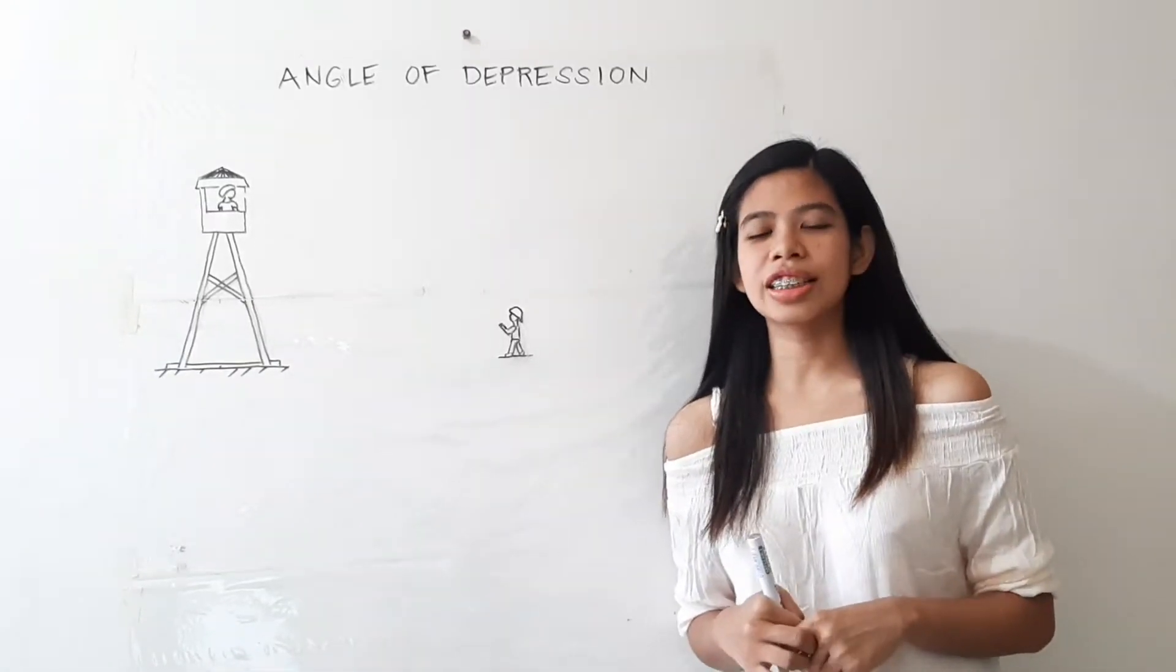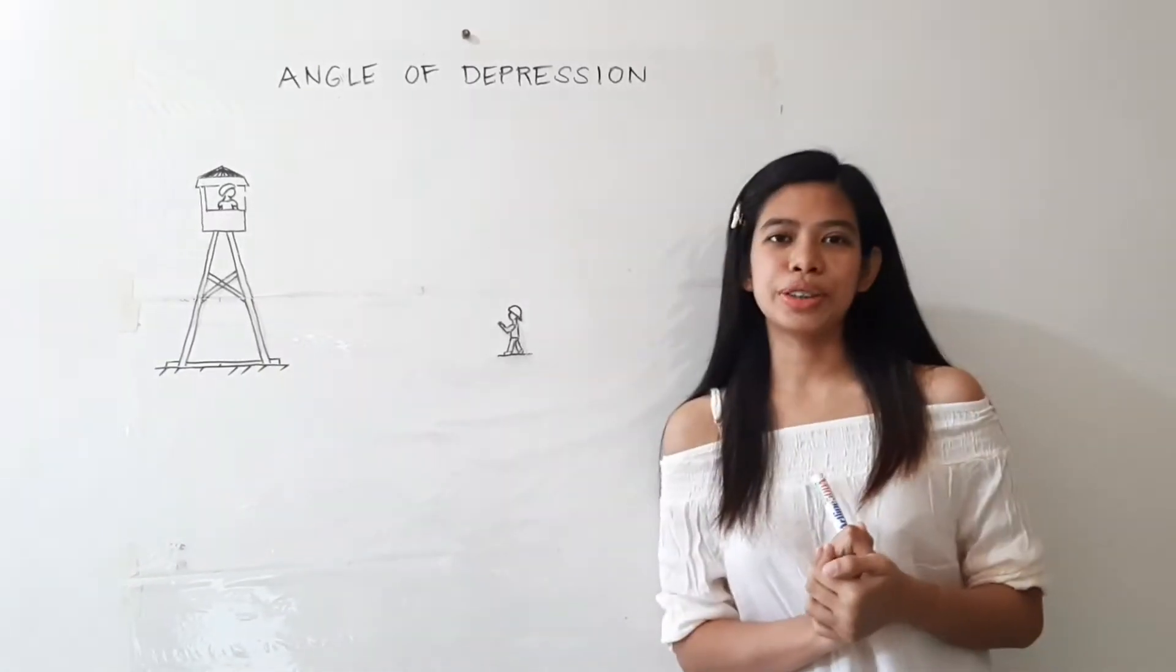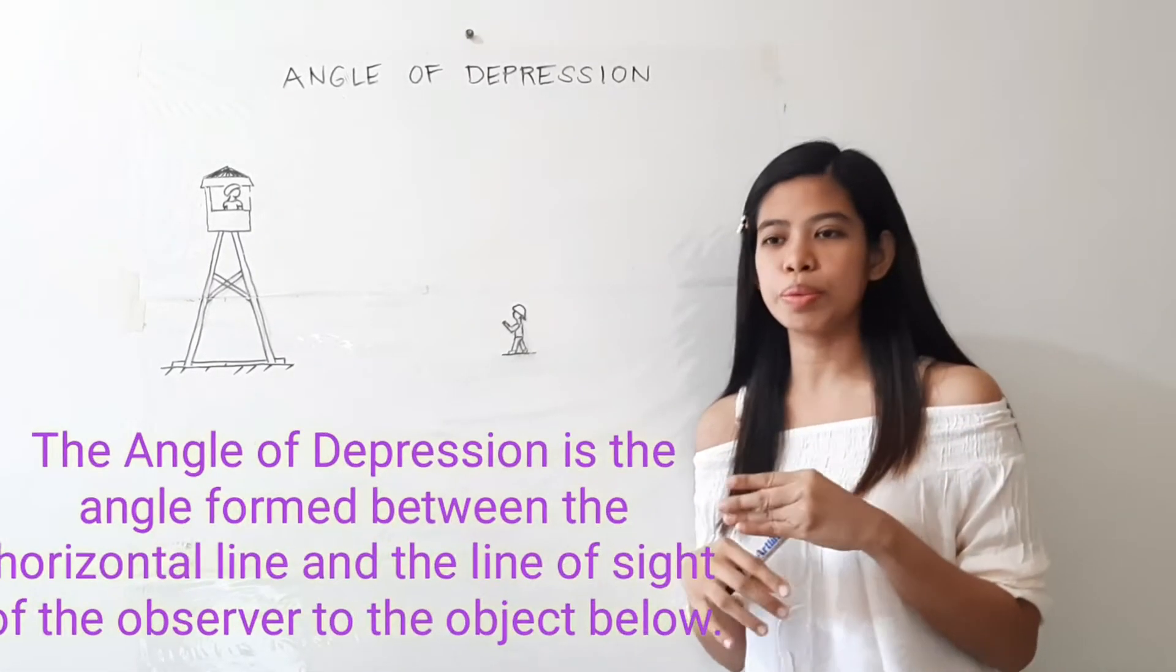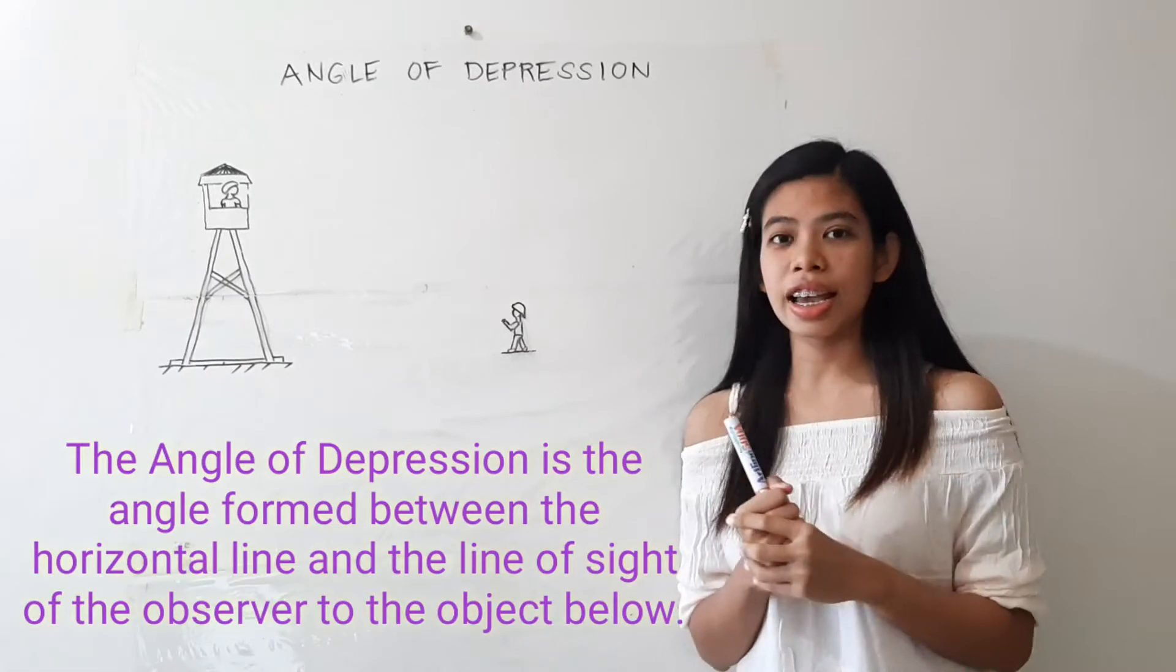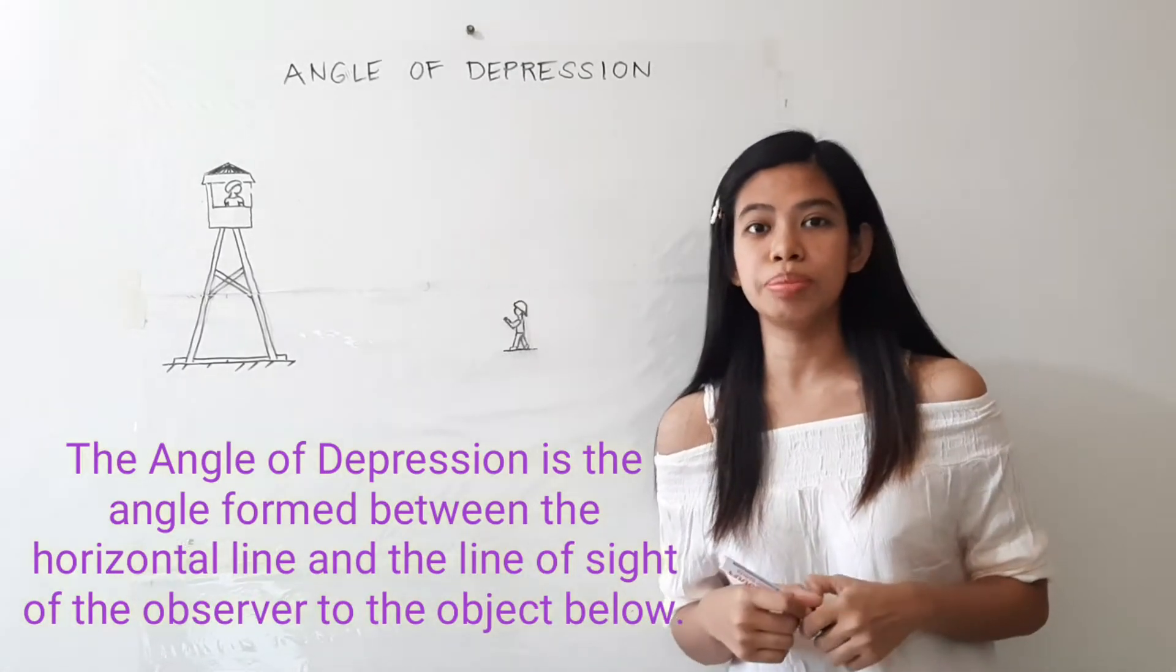Alright, so let us start the discussion about angle of depression. What is an angle of depression? It is the angle formed between the horizontal line and the line of sight of the observer to the object below.